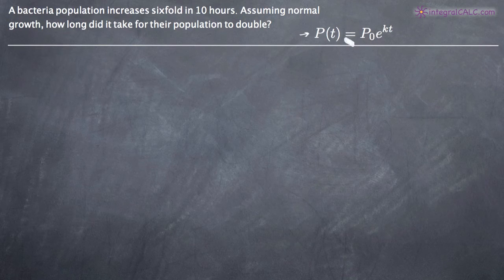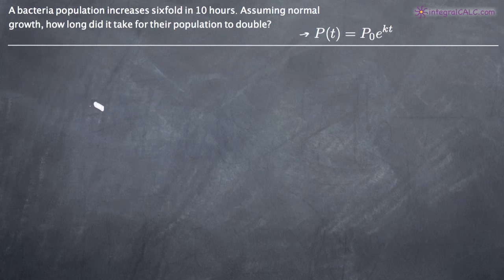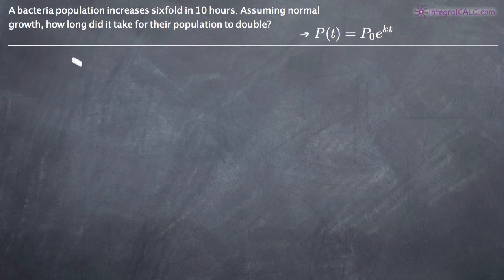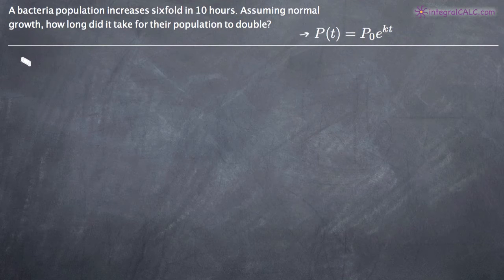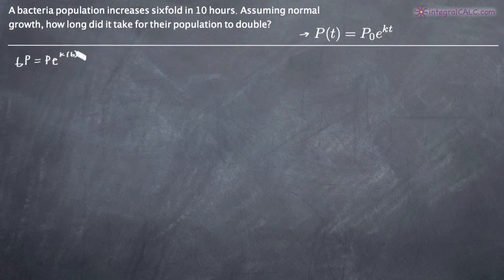The way that we do this is we're going to need to plug in some numbers, solve for k, then plug k back in to solve for t. We can use the initial condition we've been given. We know the original population is p sub-zero, we can just call it p. And we know that after ten hours, the population is six times the original population. So we can say that 6p is equal to p times e to the k times ten.